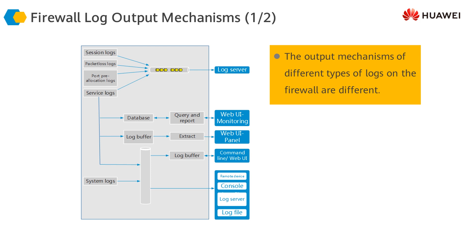System logs are generated by the firewall through the information center. The information center is the hub for the system software module. It can generate logs onto the log server, the log buffer, console terminal, or in the form of log files. There are two means for administrators to view these logs: using the log server, or viewing them on the firewall itself.